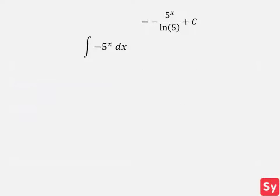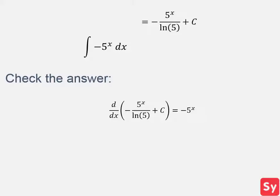And now we'll check our answer. We'll do this by taking the derivative of the antiderivative. If you forget how to take the derivative of an exponential function, here is the rule. And we get negative 5 to the x which is our integrand. So our answer is right.